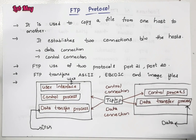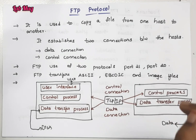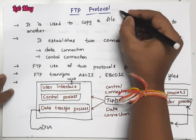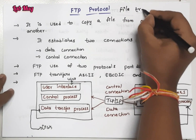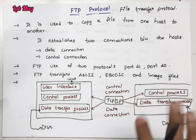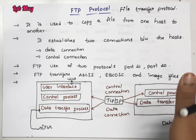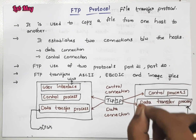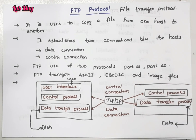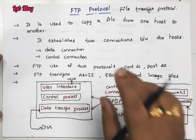Hi everyone. In the previous class, we checked application layer protocols one by one. We already covered HTTP protocol. The next second protocol is FTP protocol - File Transfer Protocol. FTP protocol is in the application layer. From the seven layers of the OSI model, the first protocol from the application layer is HTTP and the second protocol is FTP.